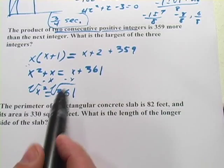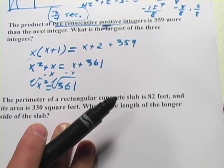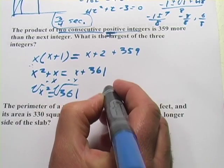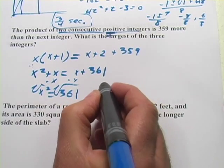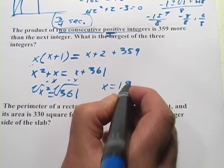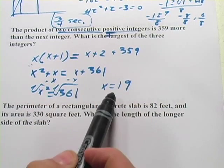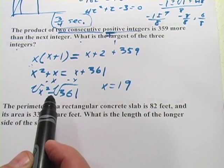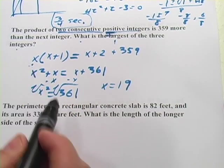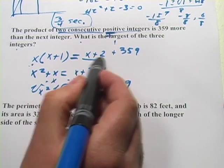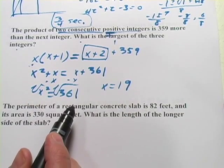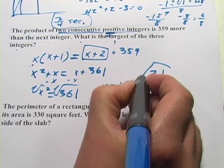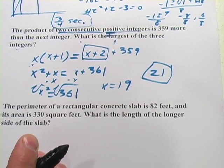And I'm going to ignore the negative answer because we're told they're positive integers in the beginning of the problem. And let's see. 361 is a perfect square. So x = 19. But let's wait a second before we say we're done, because it says, what is the largest of the three integers? When I solve for x, that's the smallest of the three. The largest of the three is x + 2. They're consecutive integers. So our answer is going to be 21.